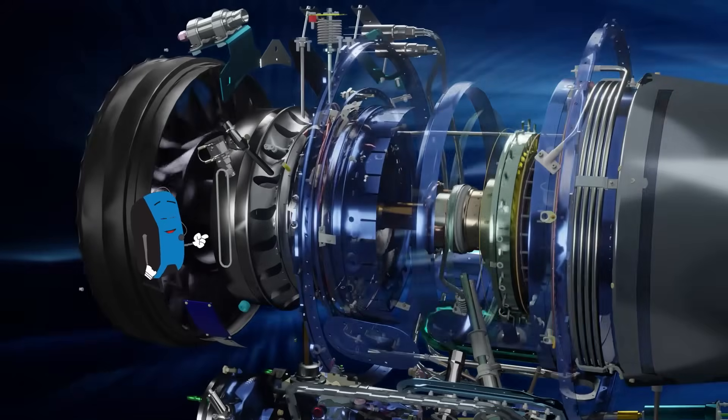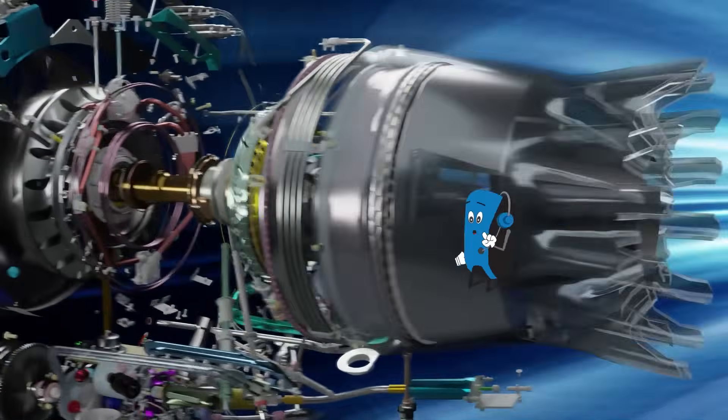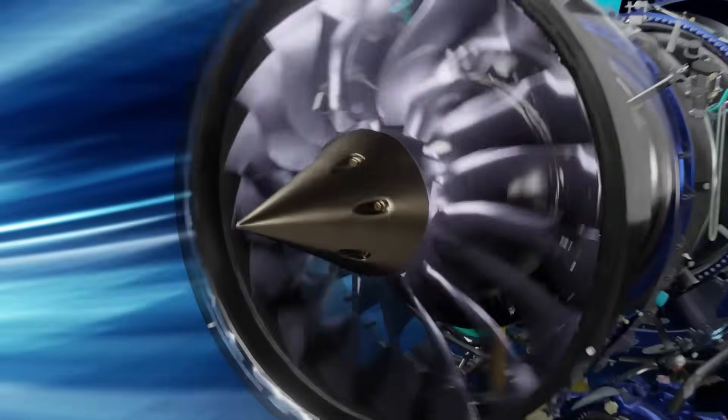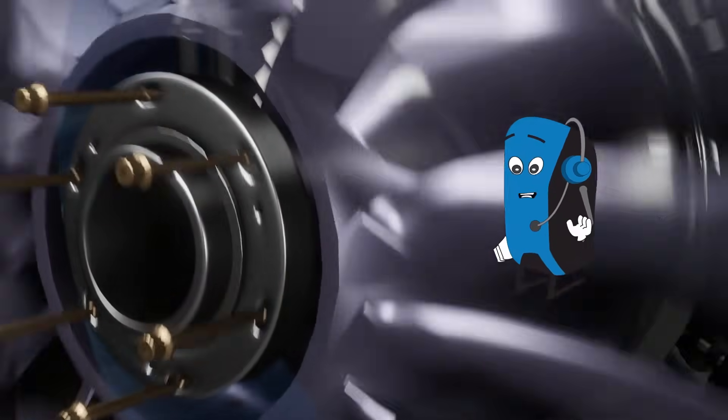Major components of a jet engine are the compressor, the combustor, and the turbine. When the engine is running, the compressor draws air into the engine.